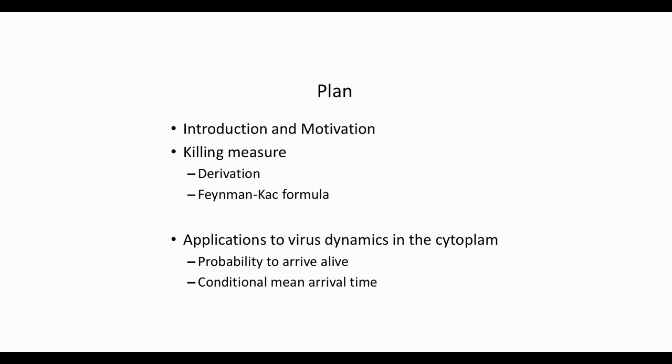Today we will discuss killing probability in the context of stochastic processes and some applications in cellular and molecular biology. We'll first introduce what is a killing measure and give the motivation. We'll derive the survival probability which is solution of a Fokker-Planck equation with a zero-order term. We'll discuss the Feynman-Katz formula.